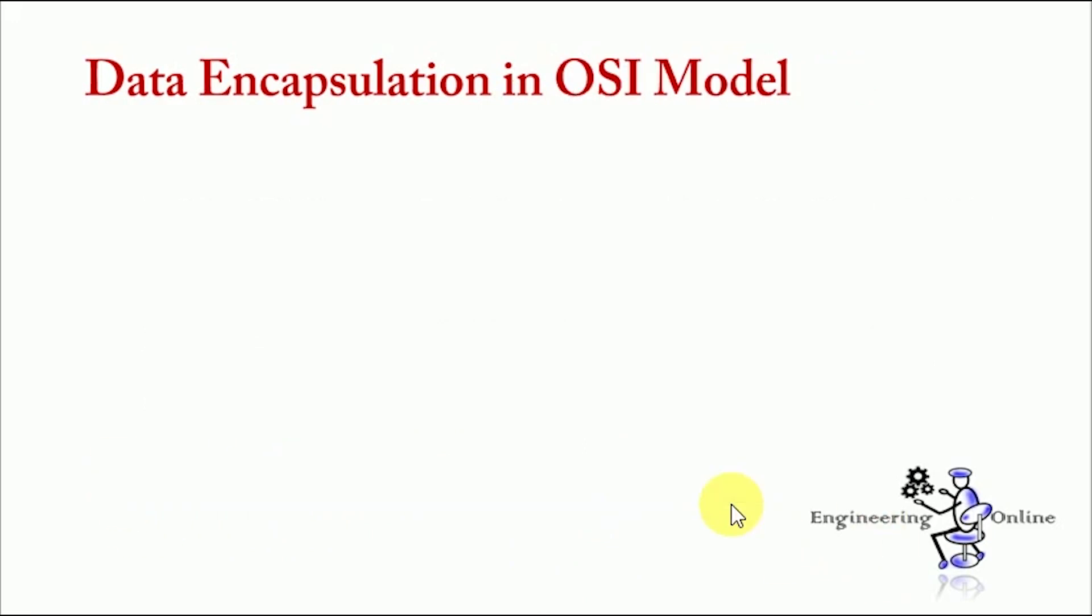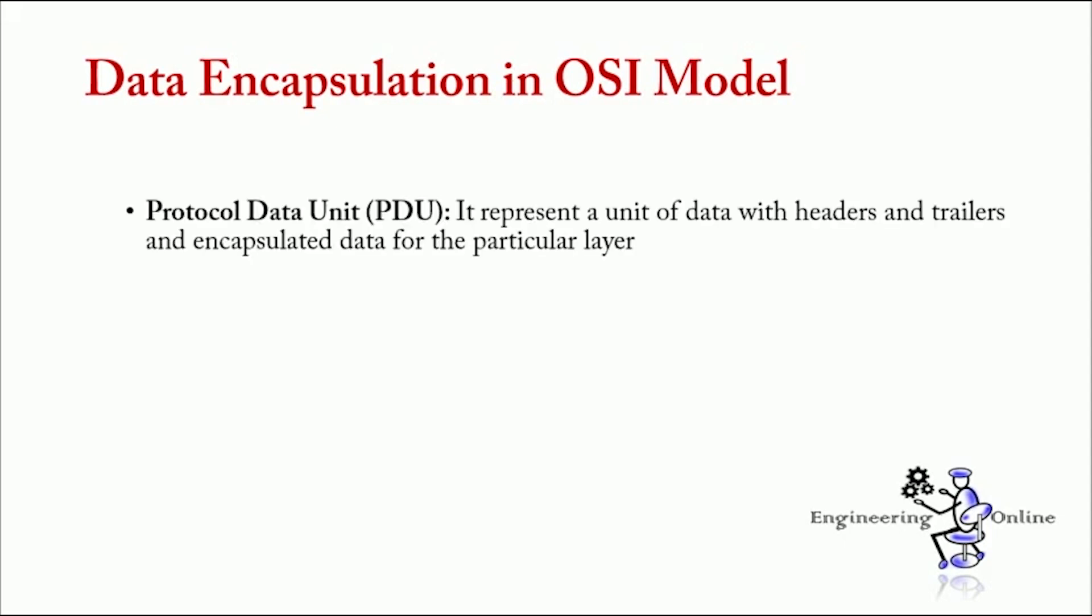Now, let's discuss how data is encapsulated in OSI model. Just like with the TCP IP layers, each OSI layer asks for services from the next lower layer. And next lower layer encapsulates the higher layer's data between a header. So, while the TCP IP model uses terms like segment, packet, and frame to refer to data packet, OSI model uses a different terminology that is known as protocol data unit, PDU.